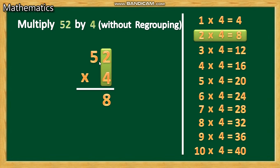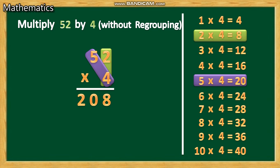Next, 5 fours are 20. Write that 20 just to the left side of this 8 — giving us 208. Finished! After finishing, you draw two lines.